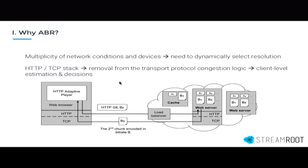Secondly, we've gotten away in recent years from that kind of custom transport-based protocol to a more traditional HTTP/TCP stack. What that's done is allowed us to reach more people and scale via CDNs. But it's also created a layering effect that's caused a degree of removal between the player and the underlying network conditions. And so that has given rise to the need for us to actually estimate the available bandwidth and make that decision logic on the player side.